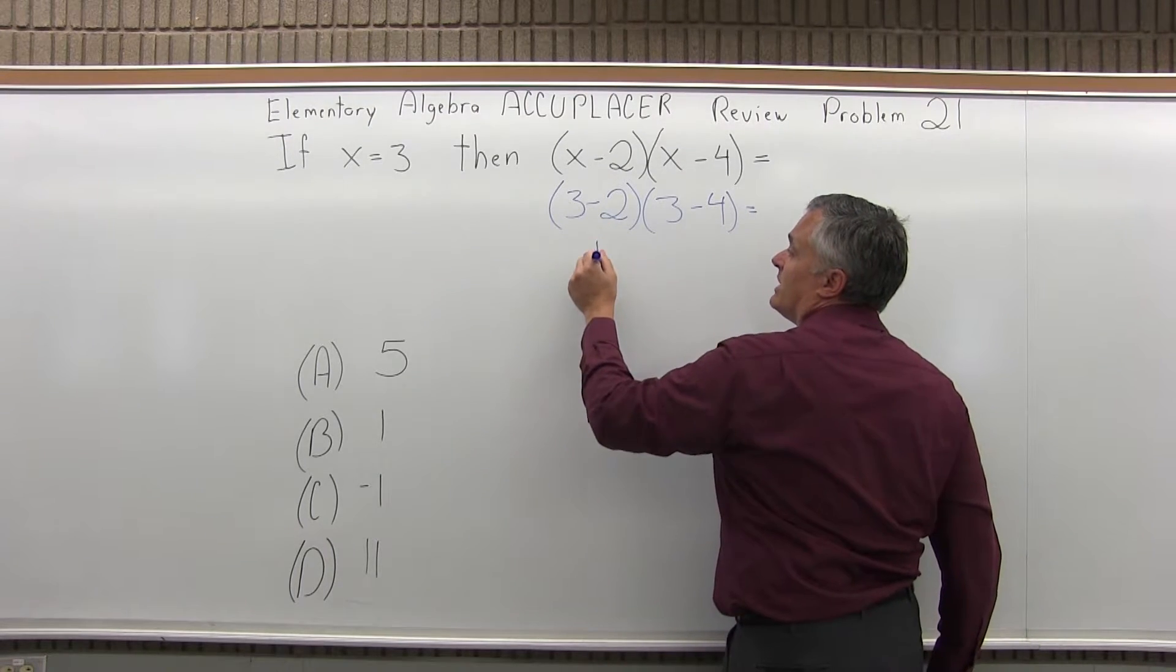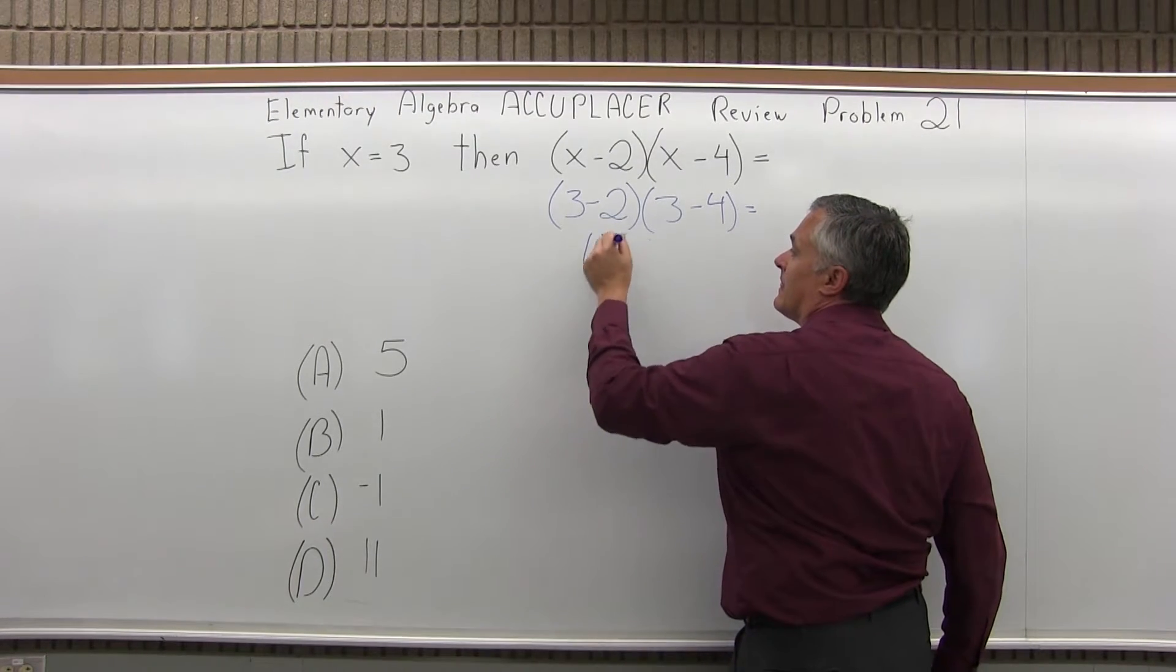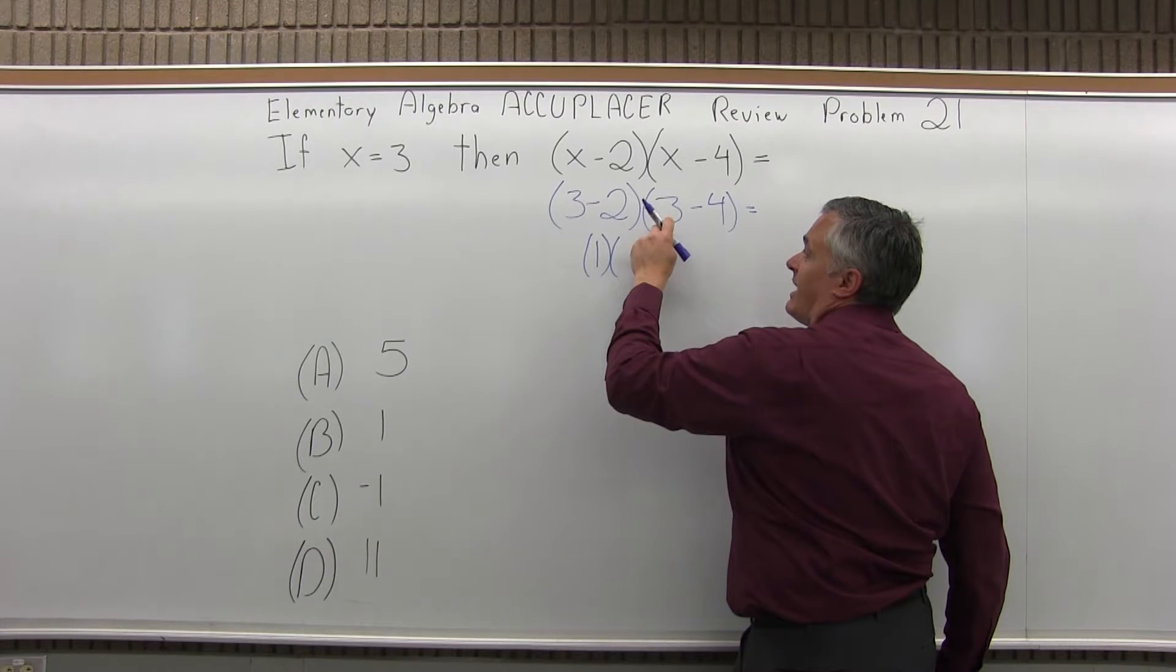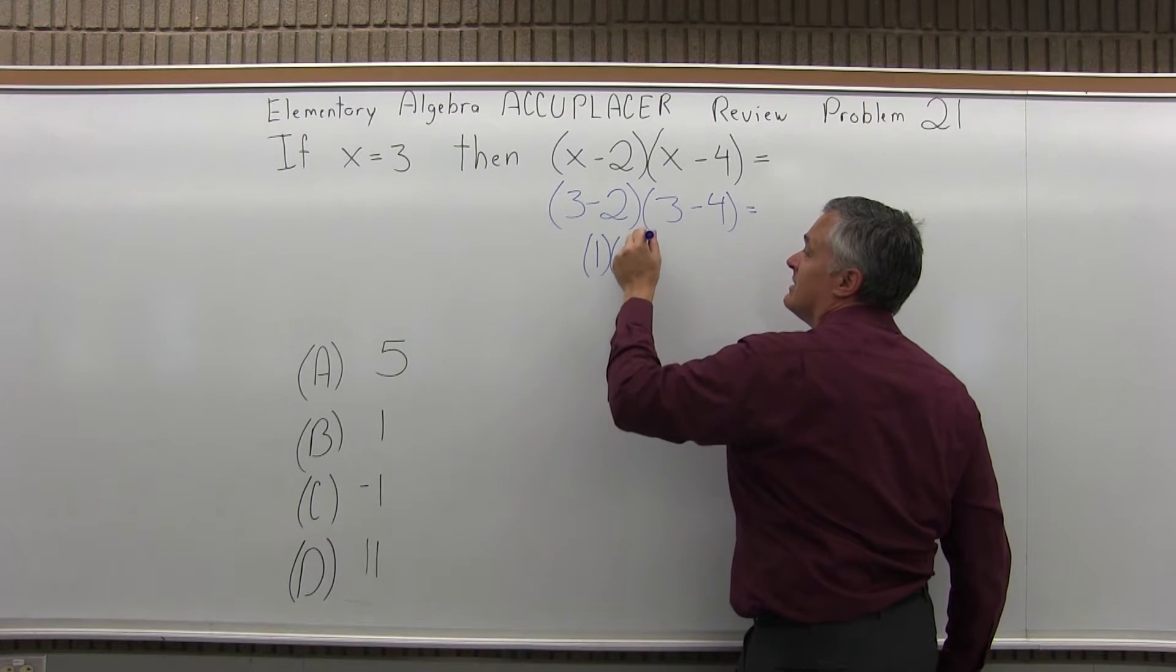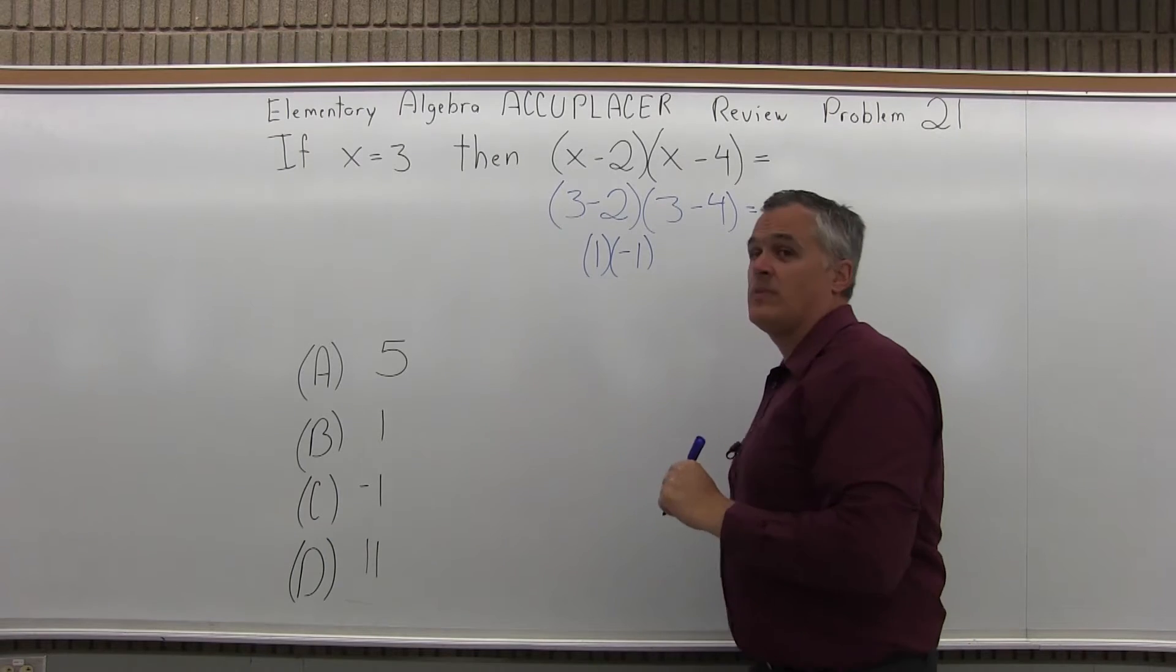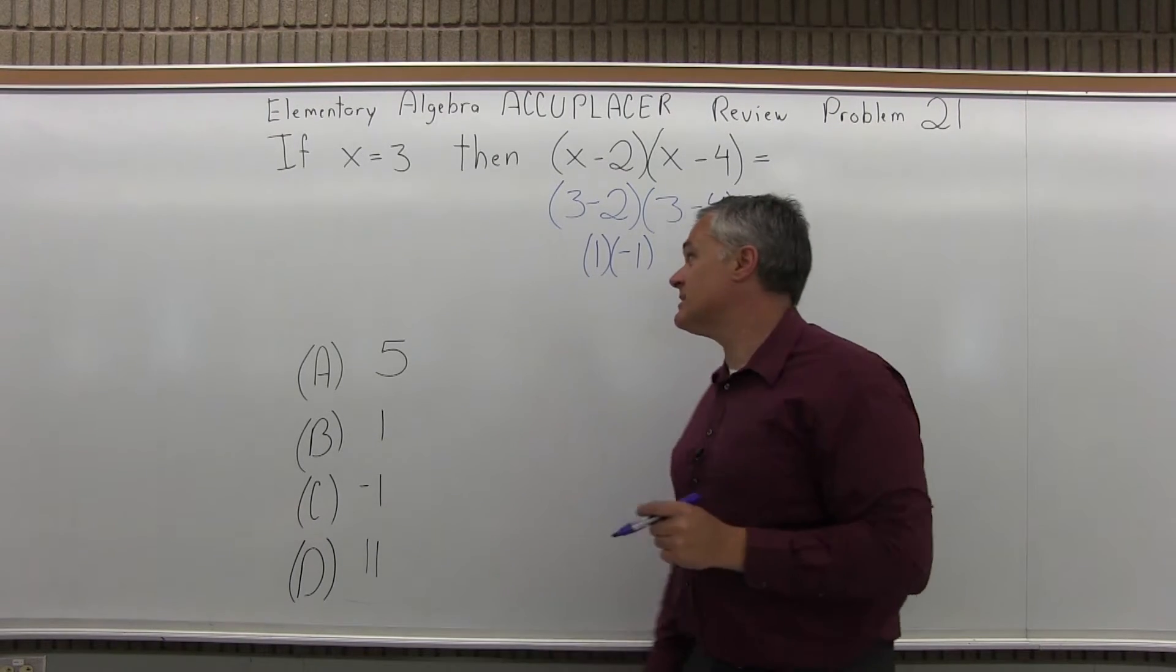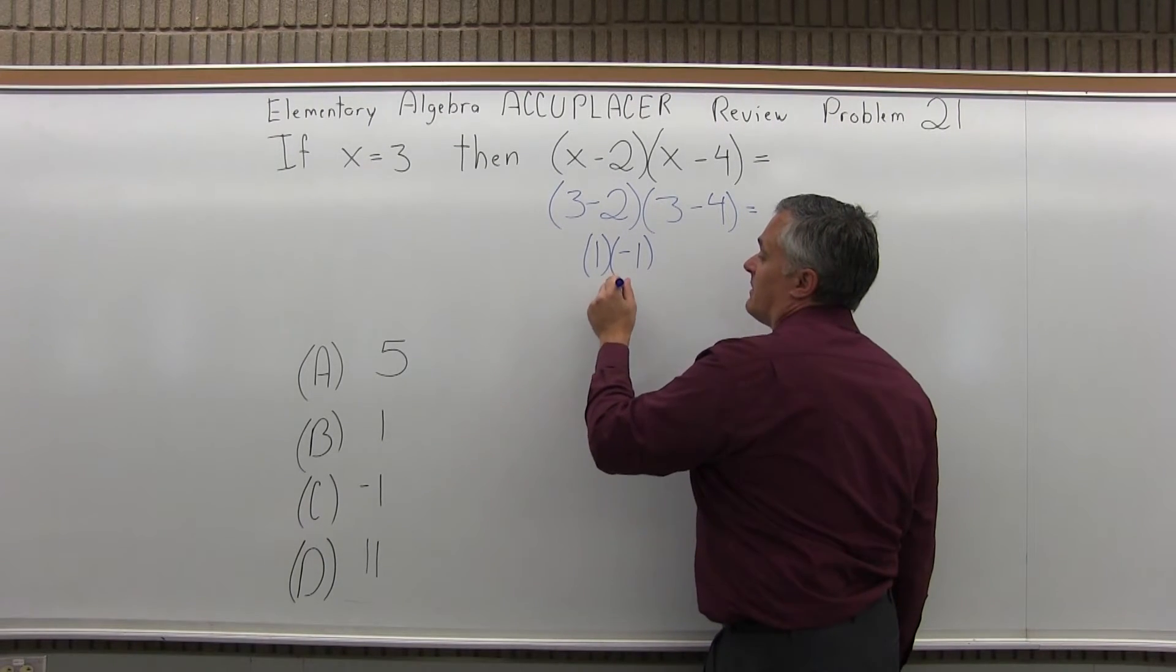3 minus 2 is 1, and then it's going to be times 3 minus 4 is negative 1. And now I can multiply 1 times negative 1 is minus 1.